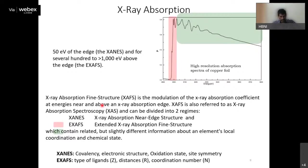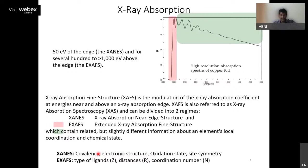When analyzing XANES, one can extract covalency, electronic structure, oxidation state, and site symmetry. From EXAFS, one can determine the type of ligands, their distances, and coordination number — how many atoms surround the absorbing atom.